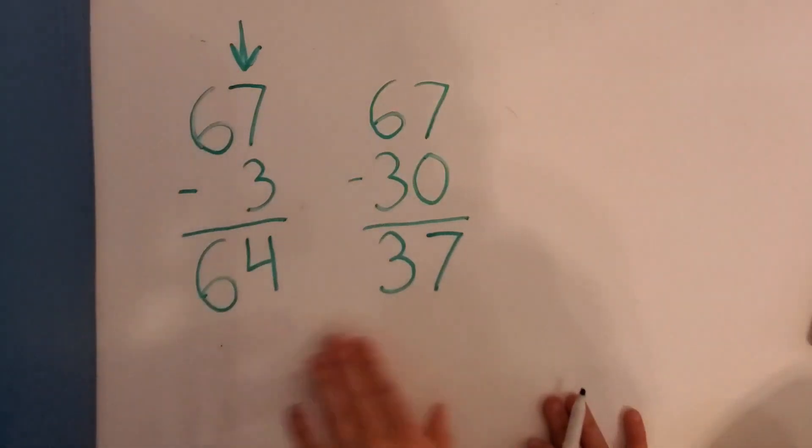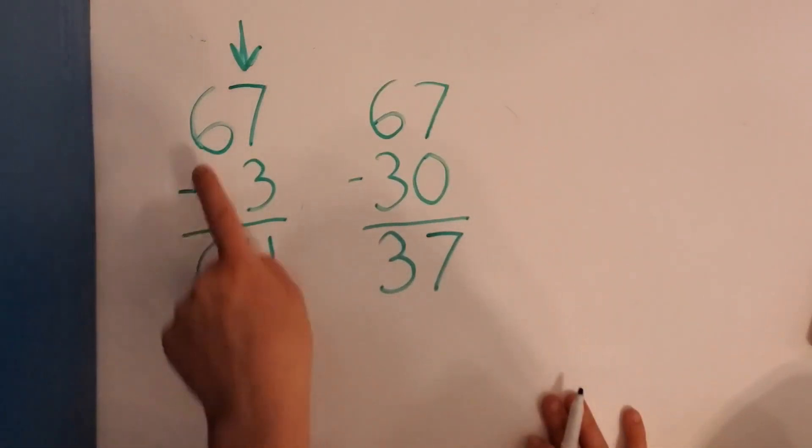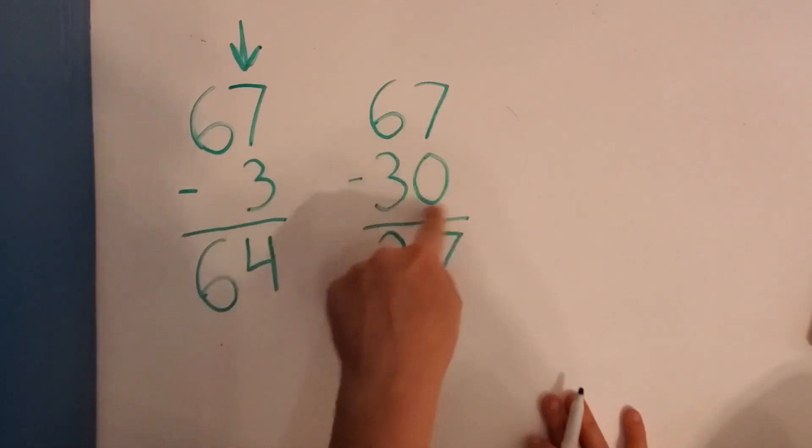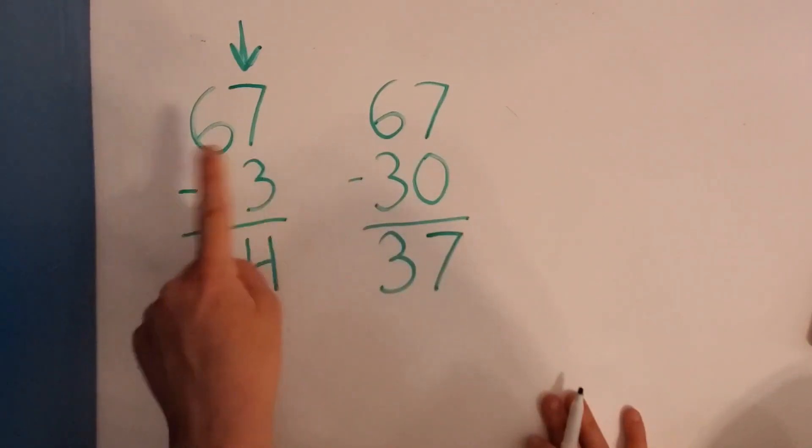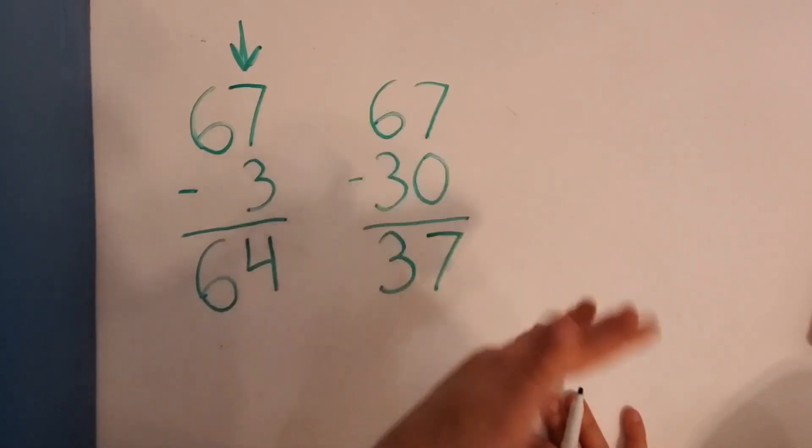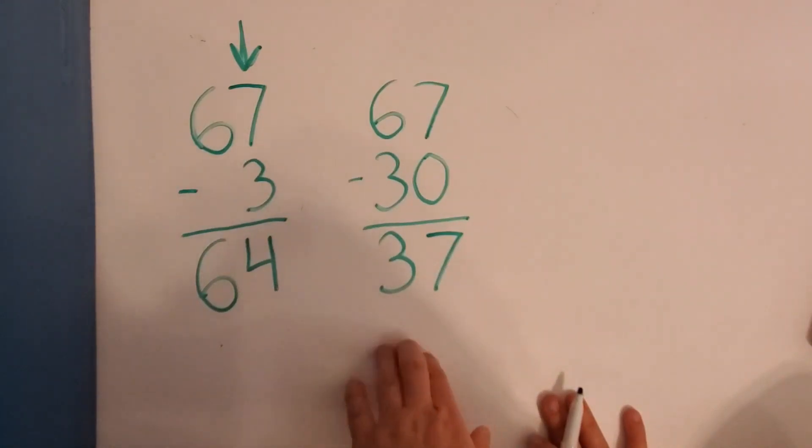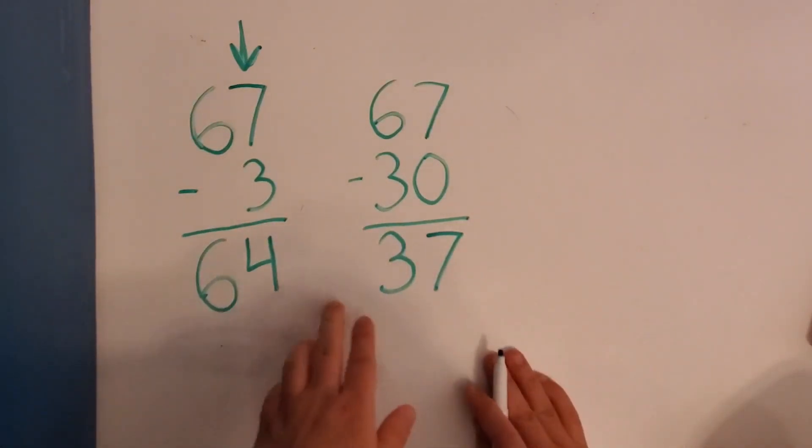So you're going to do some math problems that look like this. They're going to have the same whole at the top, but then they're going to subtract different parts. One will be with 1s. One will be with 10s. And then you're going to subtract to find the answer. So try doing the math in your head as much as you can. And if you need a little extra help, you can always draw a number line to help you out with counting backwards.